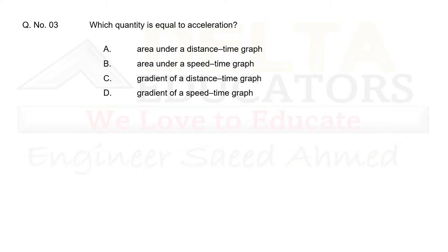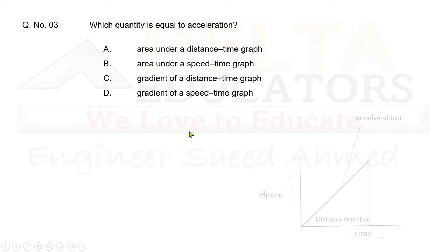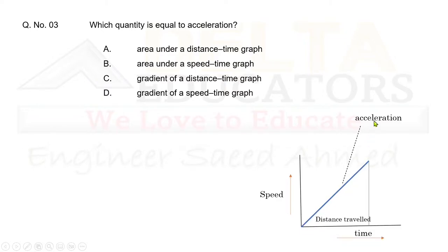Question 3: Which quantity is equal to acceleration? Option A: area under a distance-time graph. B: area under a speed-time graph. C: gradient of a distance-time graph. D: gradient of a speed-time graph. The correct option is D — when we plot a graph of speed against time, the gradient obtained is called acceleration.